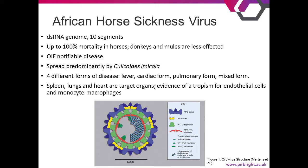So what is African horse sickness virus? It's an orbivirus closely related to bluetongue. It has a double-stranded RNA genome split into 10 segments and it's highly lethal in horses — up to 100% mortality. Donkeys and mules are less affected, and it exists as a low-level viremia in zebra. It's an OIE notifiable disease spread predominantly, but not exclusively, by Culicoides midges. In the horse there are four different forms of disease: the fever form, the cardiac form, the pulmonary form, and the mixed form. The spleen, lungs, and heart are believed to be the target organs, and there's also evidence of a tropism for endothelial cells and monocyte macrophages.